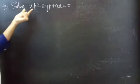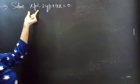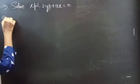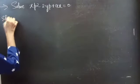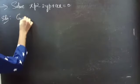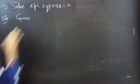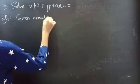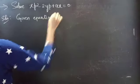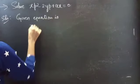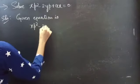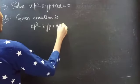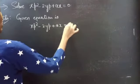Problem: solve xp² minus 2yp plus ax equals to 0. Solution. The given equation is xp² minus 2yp plus ax equals to 0.